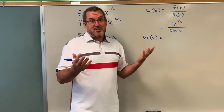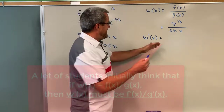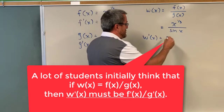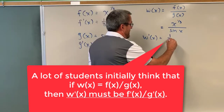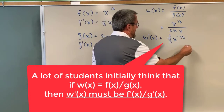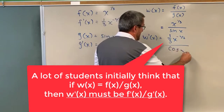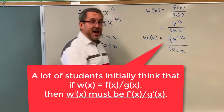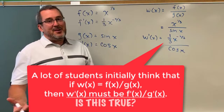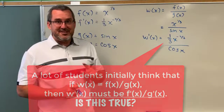Sometimes, when students are asked to think that way, their idea is: just take the derivative of the numerator and get one-third x to the negative two-thirds, and just take the derivative of the denominator and get cosine of x, and call that the derivative. Well, the reality is that's not how it works. It's going to be different.